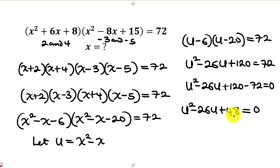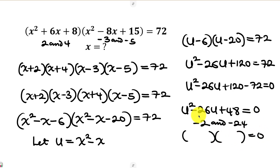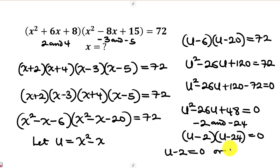This quadratic in u can be factorized. We look for numbers that multiply to 48 and add up to −26; those are −2 and −24. So we get (u − 2)(u − 24) = 0. This gives two cases: u − 2 = 0 or u − 24 = 0. Remember that u = x² − x, so we substitute back.